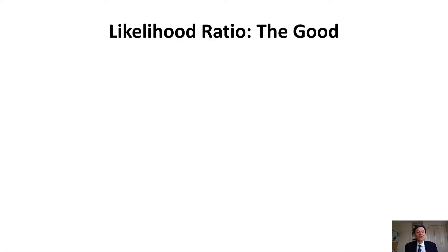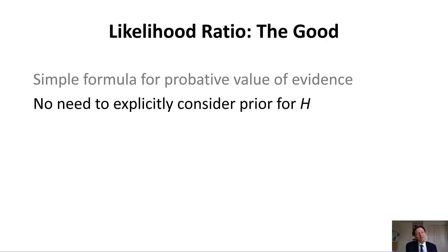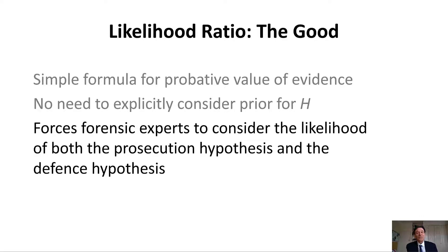There are some good things about the likelihood ratio. It is a simple formula for the probative value of evidence. There isn't any need to explicitly consider the prior for H in order to get the likelihood ratio, and lawyers like that because they don't want forensic experts expressing subjective judgments about the probability of H. It also forces experts to consider the probability of the evidence under both the prosecution and defense hypotheses, and that's known to be quite an effective way of avoiding the so-called prosecutor's fallacy.